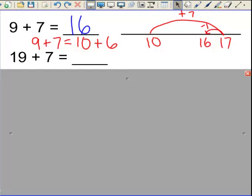20 plus 7 minus 1, 19 plus 1 plus 6, even 7 plus 3 plus 16.